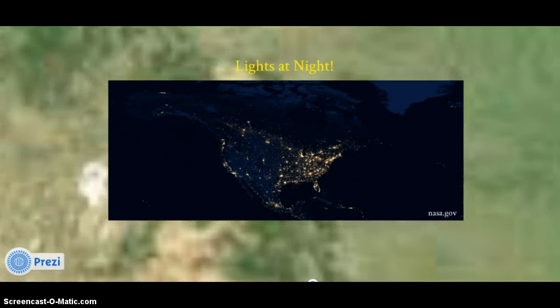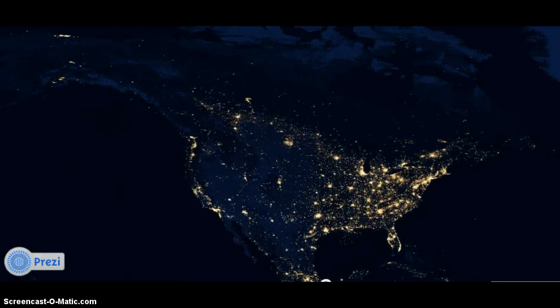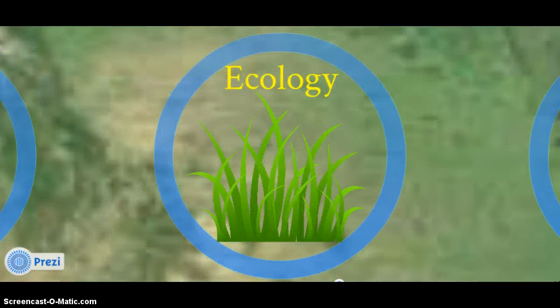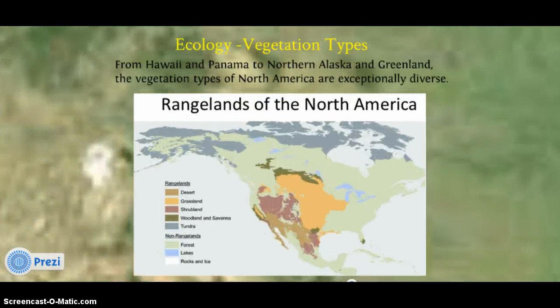Lights at Night — this is a cool depiction of population within the North American continent. Now, a little about the ecology of North America. The vegetation types of North America are very diverse. This map depicts the rangelands of North America. You'll notice the grassland ecosystems spanning the center of the continent, largely due to the Rocky Mountain range, and then our desert ecosystems bounding between southern United States and Mexico.